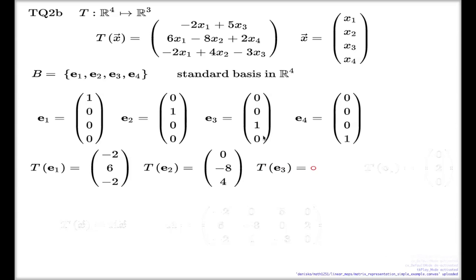T of e3. These are the components of e3. It will be 5, nothing in here, so zero, and negative 3. 5, zero, negative 3.